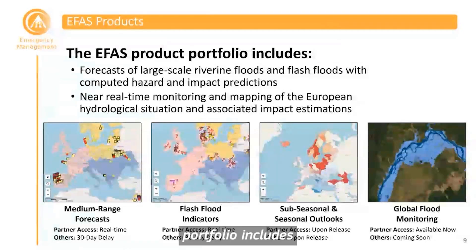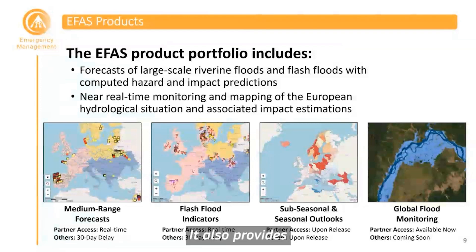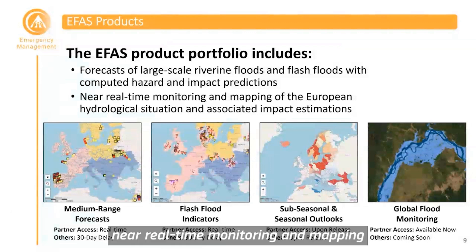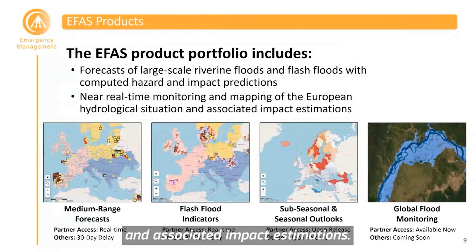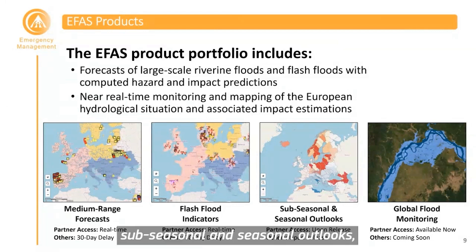The EFAS product portfolio includes forecasts of large-scale riverine floods and flash floods with computed hazard and impact predictions. It also provides near-real-time monitoring and mapping of the European hydrological situation and associated impact estimations. The product portfolio includes medium-range forecasts, flashlight indicators, sub-seasonal and seasonal outlooks, and global flood monitoring tools.